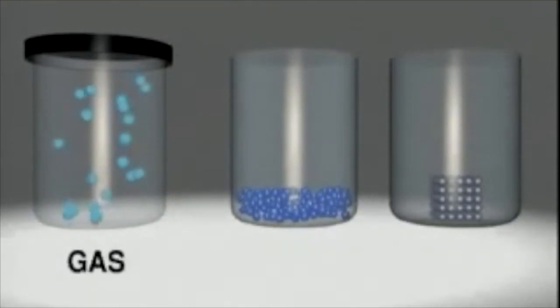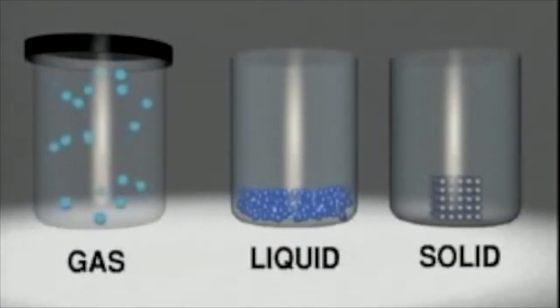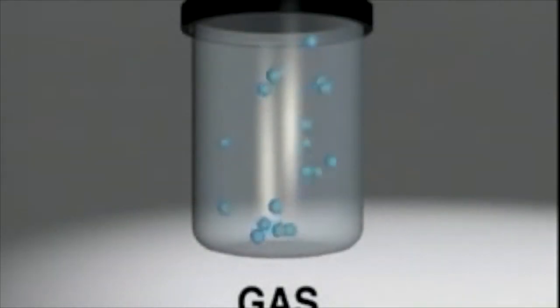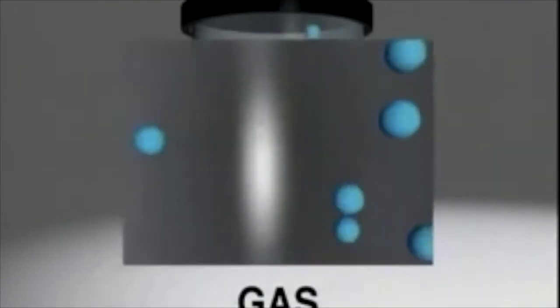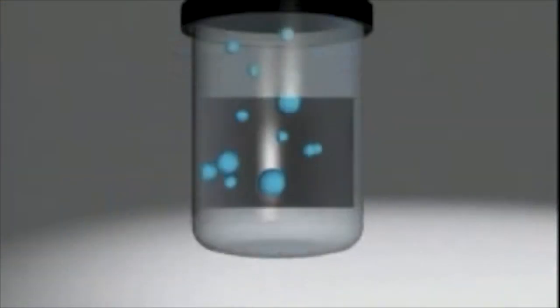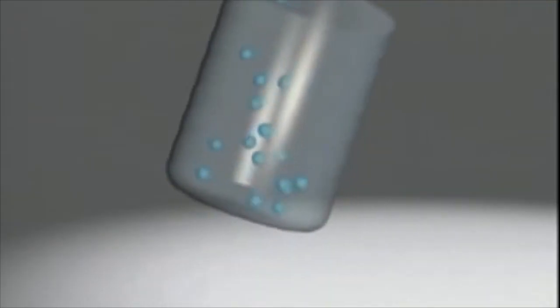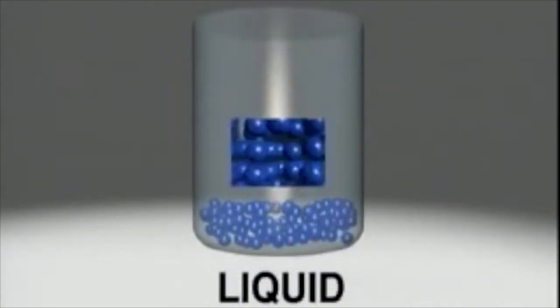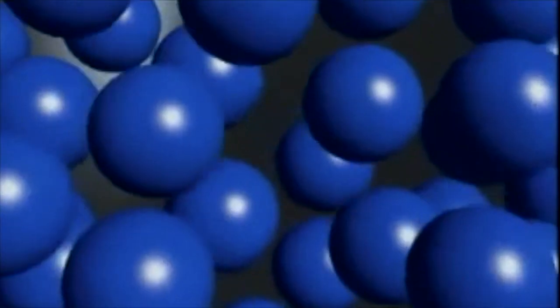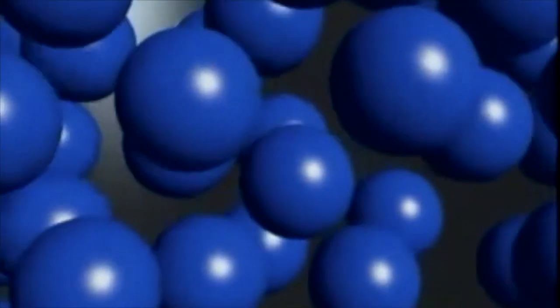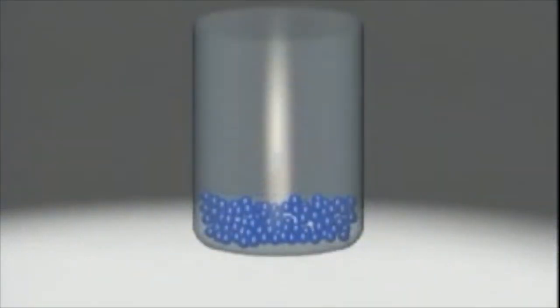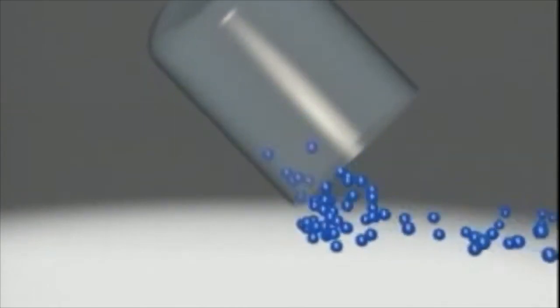The states of matter are gas, liquid, and solid. Gases assume the shape and volume of their container. Particles of a gas are separated from each other, move in straight lines, and in a completely random manner. They change direction only when they collide with each other or the container. Liquids have a definite volume and assume the shape of their containers. The particles of a liquid are closely spaced, and so their motion is still random but much more limited. The particles slip past and collide with near neighbors.